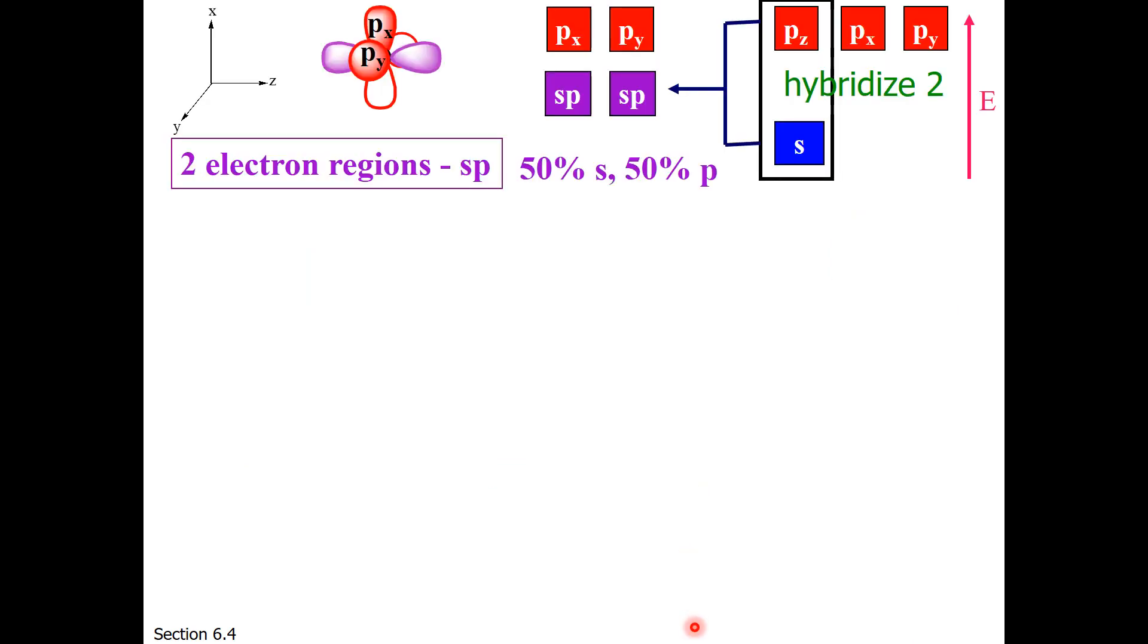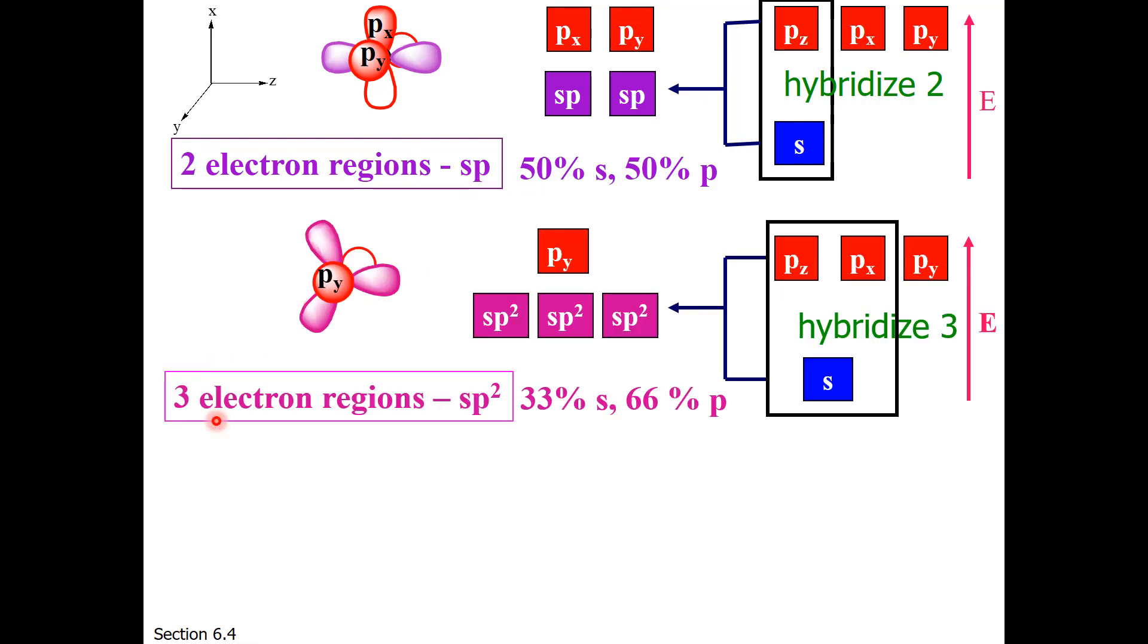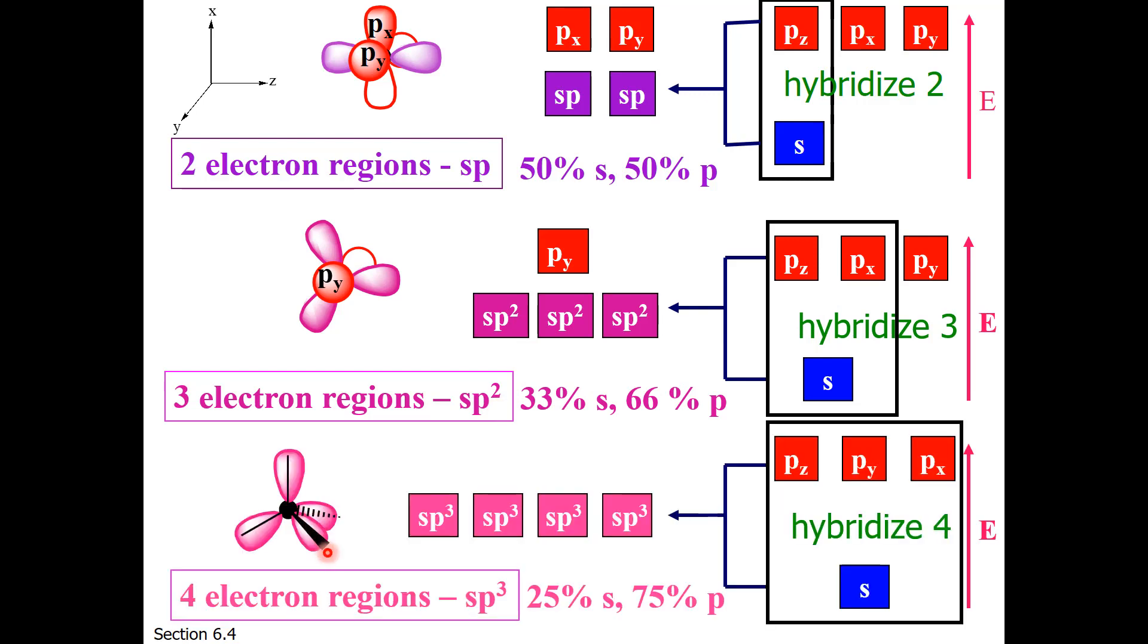So I hope by now you recognize the pattern. When there are two electron regions, two orbitals are hybridized to give two sp orbitals. When there are three electron regions, three orbitals are hybridized to give three sp2 orbitals. And as you might guess, when there are four electron regions, all four orbitals about the central atom are hybridized to give us four sp3 orbitals.